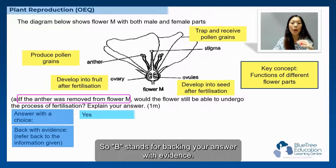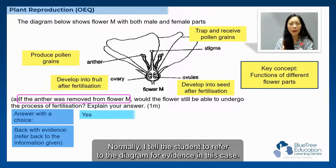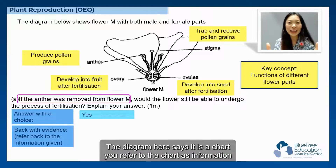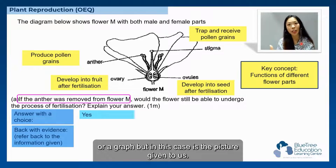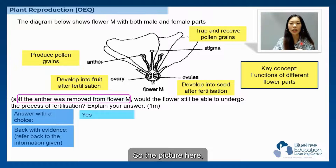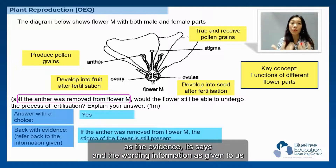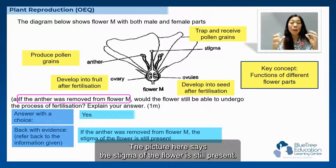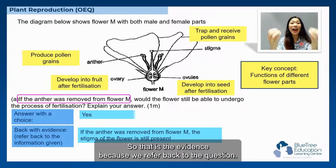B stands for 'Back your answer with evidence.' I tell students to refer to the diagram for evidence. If it's a chart or graph, you refer to that information. In this case, it's the picture given to us. The picture and wording provided says the anther was removed, and the stigma of the flower is still present. That is the evidence, because we refer back to the question.